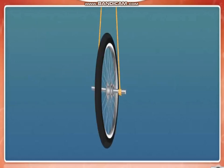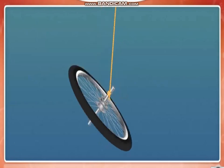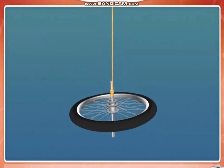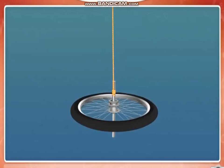Here we have a wheel hanging from two ropes, one on either side of the wheel. Let us cut one rope. The wheel falls down due to gravity as expected.